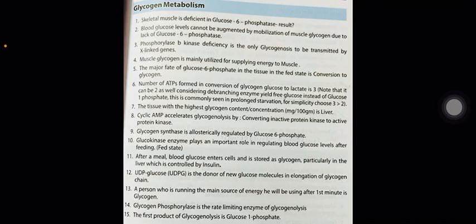The tissue with the highest glycogen content or concentration is the liver. Cyclic AMP accelerates glycogenolysis by converting inactive protein kinase to active protein kinase. Glycogen synthase is allosterically regulated by glucose-6-phosphate. Glucokinase plays an important role in regulating blood glucose levels after feeding. After a meal, blood glucose enters cells and is stored as glycogen, particularly in the liver, which is controlled by insulin. UDP-glucose is the donor of new glucose molecules in elongation of the glycogen chain. For a person who is running, the main source of energy after the first minute is glycogen. Glycogen phosphorylase is the rate-limiting enzyme of glycogenolysis. The first product of glycogenolysis is glucose-1-phosphate.